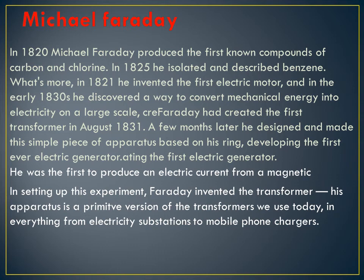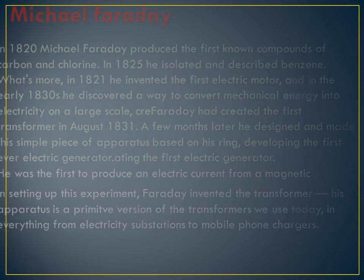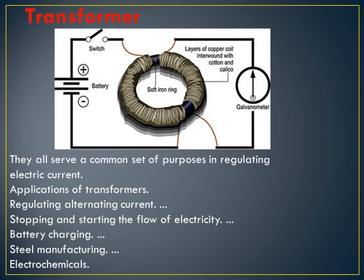Michael Faraday was the first to produce electric current from a magnetic field. In setting up this experiment, Faraday invented the transformer. Nowadays when we hear that a transformer has gone, that is why there is no electricity in one area but another area has electricity because the transformer there is working properly. His apparatus is a primitive version of the transformers we use today. Now we will see the diagram of a transformer.